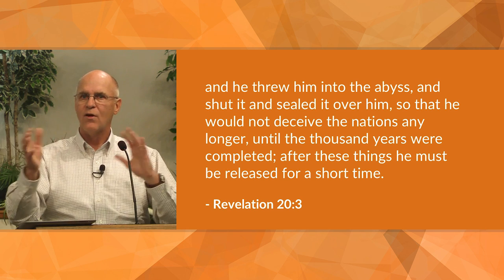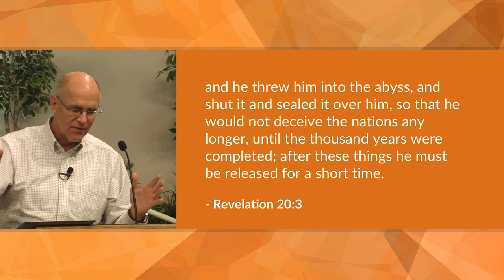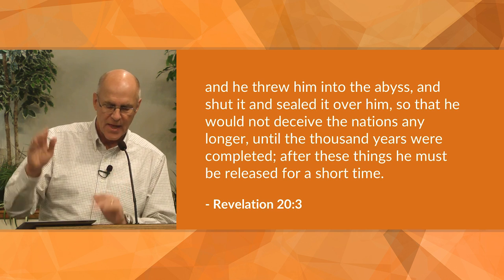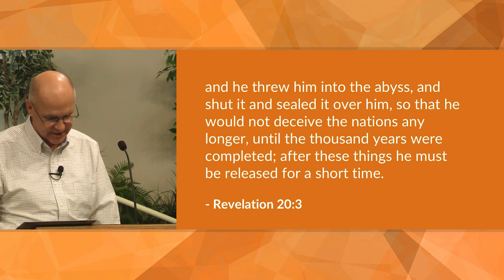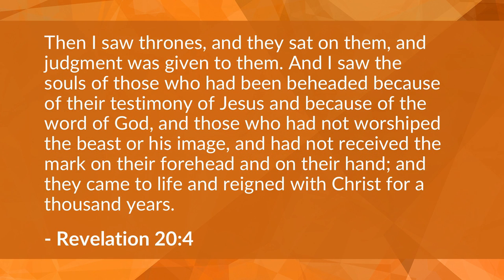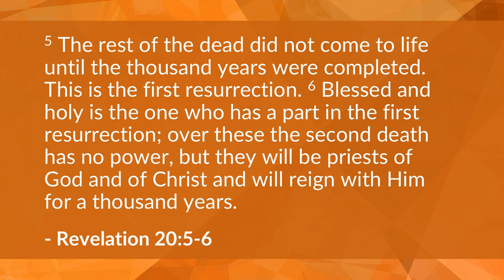You see the two prophecies: one is for a short time near Rome, one is for the end of time. John leaves Satan's final demise hanging and goes on to describe the victory of the saints in chapter 20 verses 4 to 6 and 7 to 10. Verses 4 to 6: 'Then I saw thrones, and they sat on them, and judgment was given to them. And I saw the souls of those who had been beheaded because of their testimony of Jesus and the word of God, who had not worshiped the beast or his image and had not received the mark on their forehead and hand. And they came to life and reigned with Christ for a thousand years. The rest of the dead did not come to life until the thousand years were completed. This is the first resurrection.'